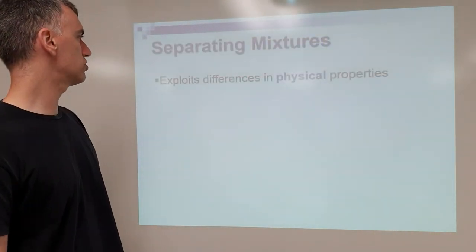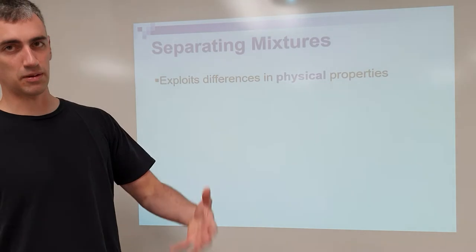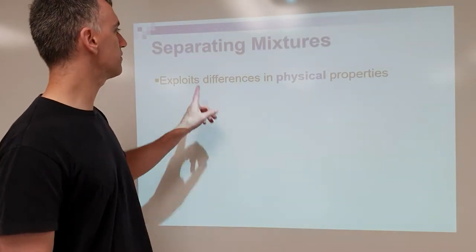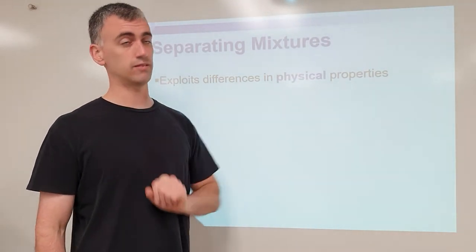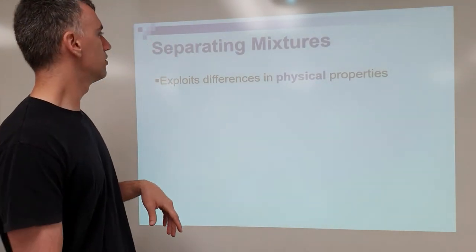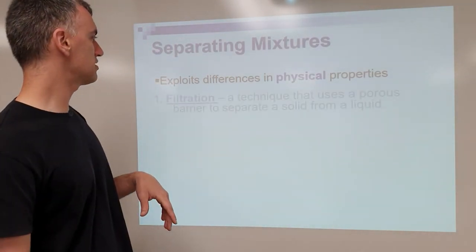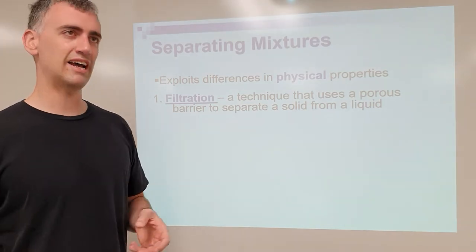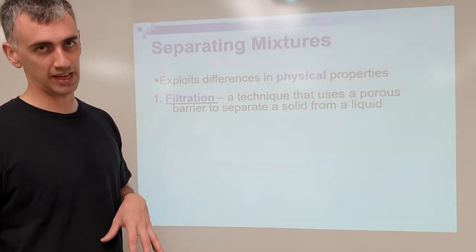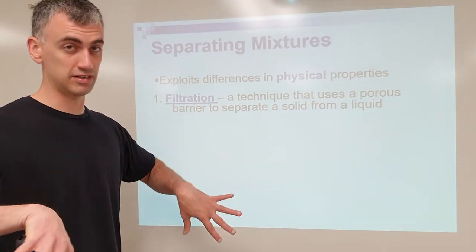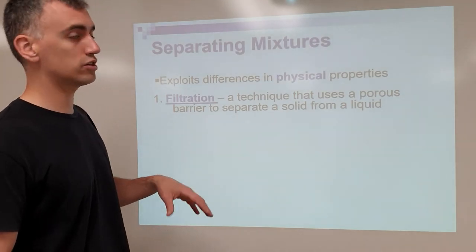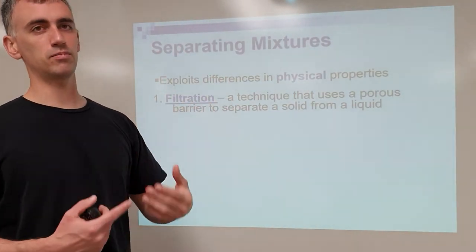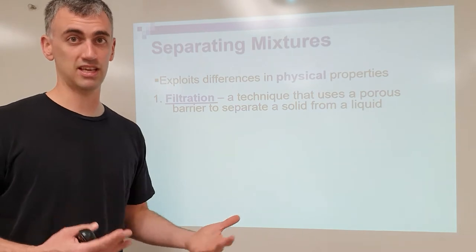To separate mixtures, one of the big things you do in chemistry is exploit differences in physical properties — things like boiling point or size. We want you to be familiar with the different ways you can separate a mixture of substances, because that's one of the big things chemists do.